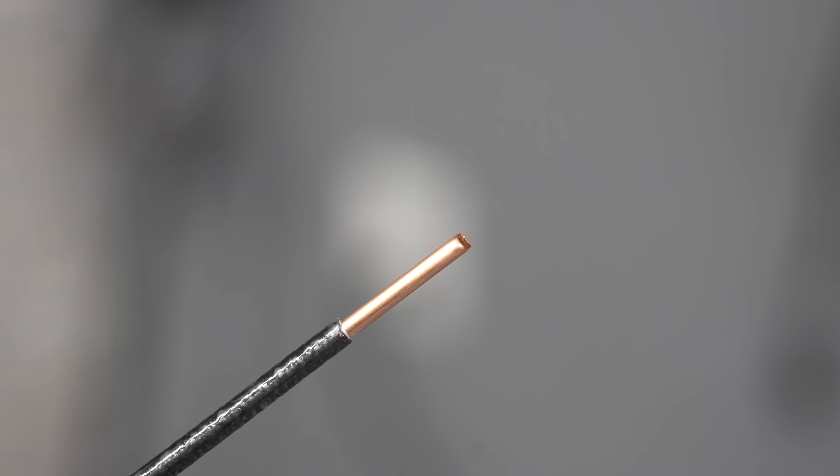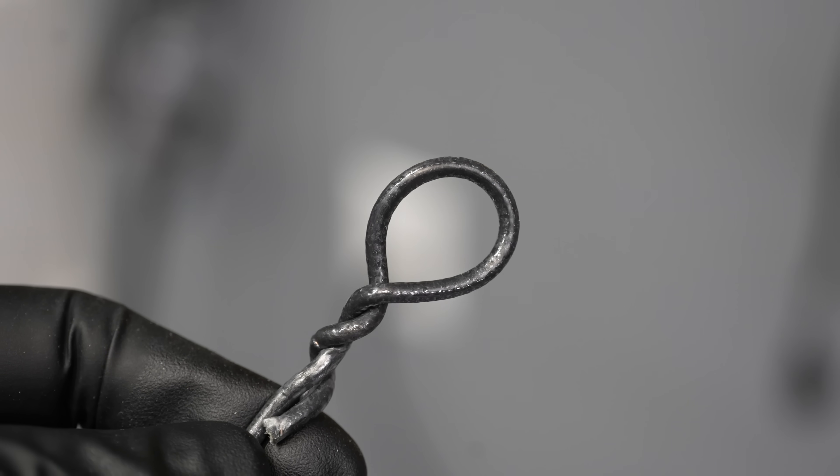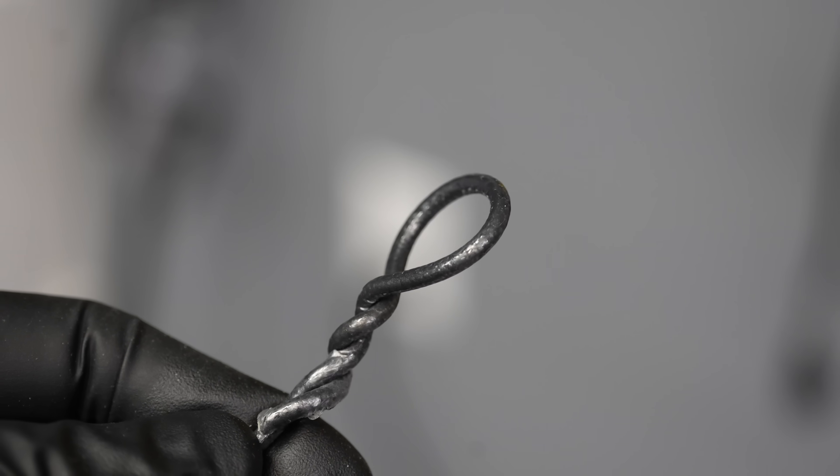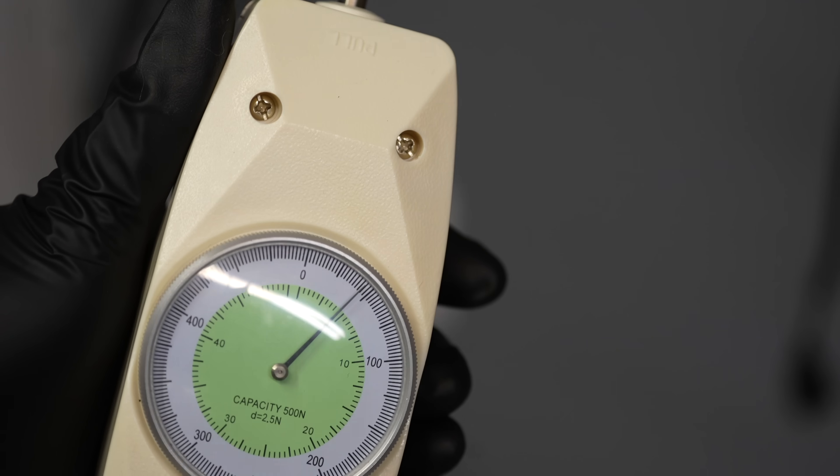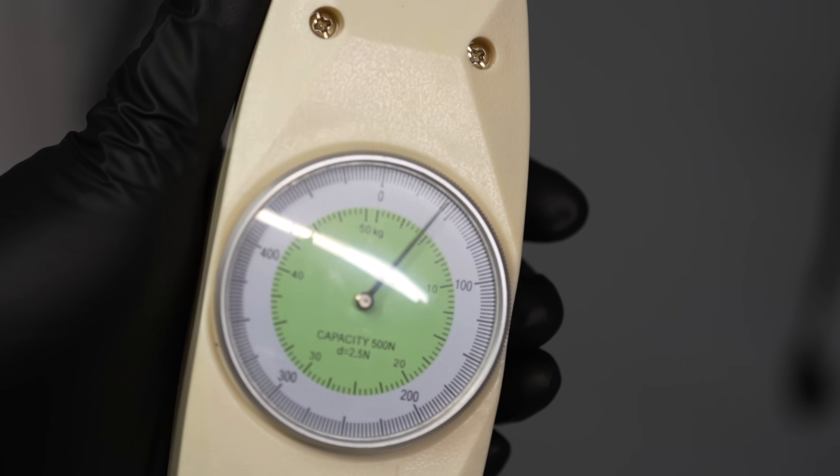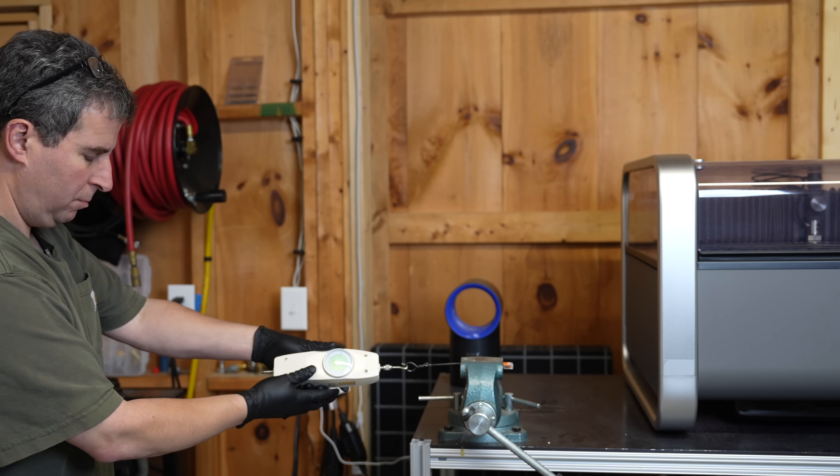One of the most important tests people request is the pull out test. That's where we insert the wire into the connector and we pull as hard as possible to see at what point will it break free. Unlike a normal scale, this one has a memory, so once that wire breaks free it will record the maximum amount of force required to pull it out.